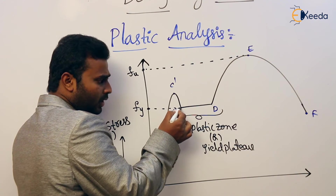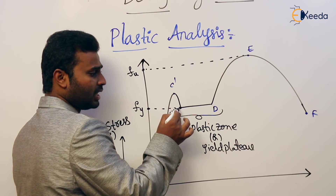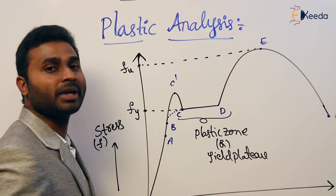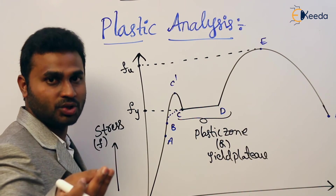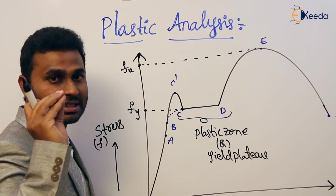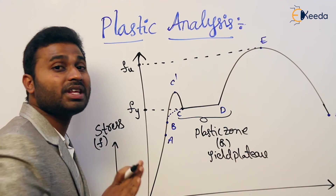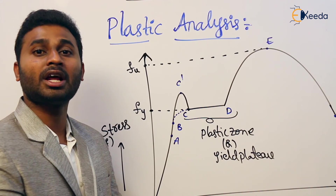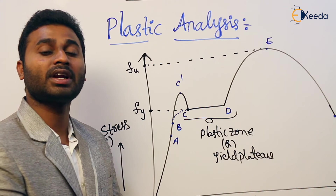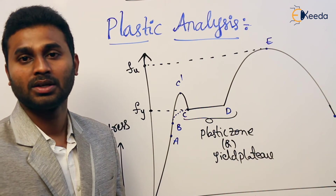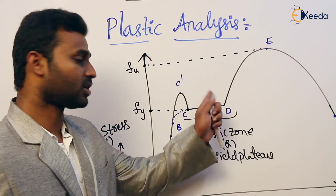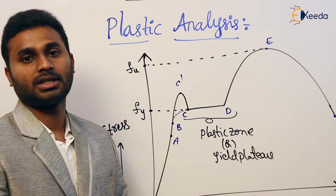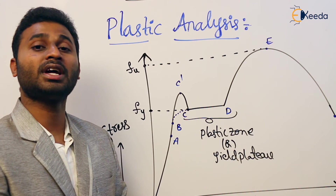After point C, after yielding, mild steel still has strength. This is not the case for other materials — other materials will not have any strength after yielding. But mild steel is an exceptional case where it has strength after yielding. This strength is called reserve strength — the strength of a material beyond yielding. This reserve strength is the basis for plastic analysis. Plastic analysis is purely based on this concept.